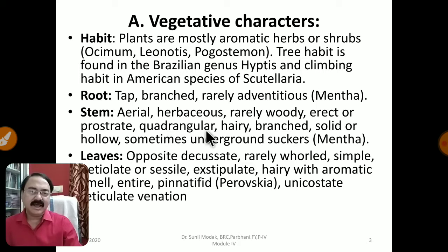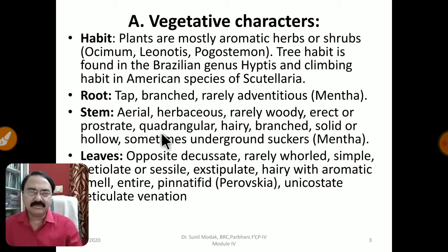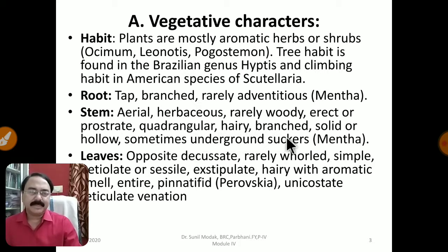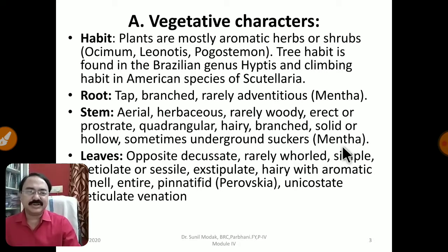The stem is a very typical characteristic feature of this family Lamiaceae. It is aerial, herbaceous, rarely woody, erect or sometimes prostrate as in Mentha — growing along the ground. It is typically quadrangular or squarish, not circular. Hairs are typically seen on the stem. The stem is branched, solid or sometimes hollow. Sometimes underground suckers are found, as in Mentha, growing along the ground and helping in vegetative propagation.